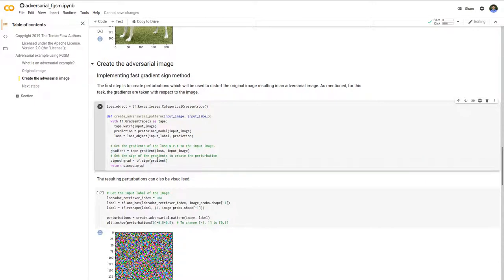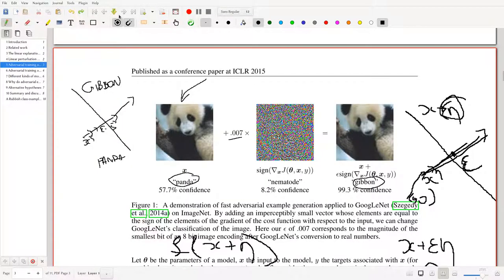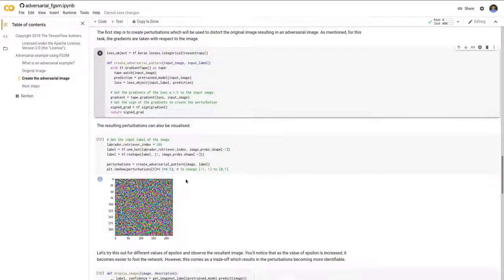It returns this sign gradient, which is the vector we were talking about. It's not really a unit vector but you can think of it as a really small vector in the direction you want to go in.